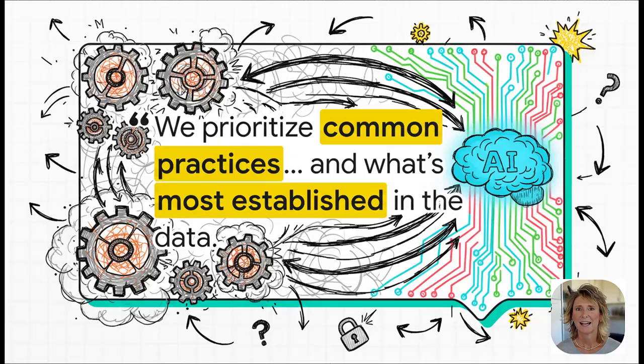Okay, look closely at the language here. Common practices, widely accepted, most established. You see what's happening? AI isn't programmed to find the best answer. It's programmed to find the most popular one. It just regurgitates what's already out there in the massive pile of data it was trained on. And that is the paradox in a nutshell.